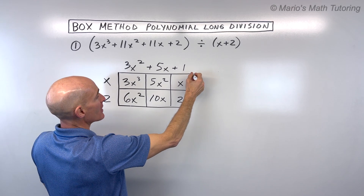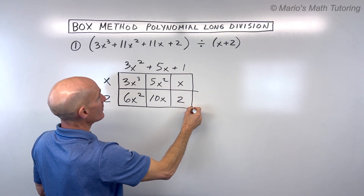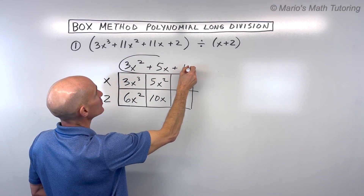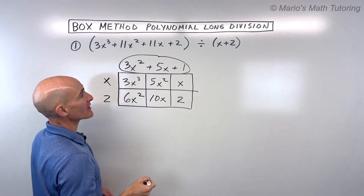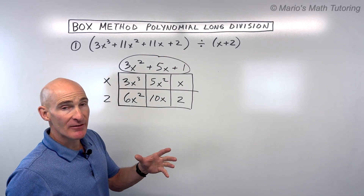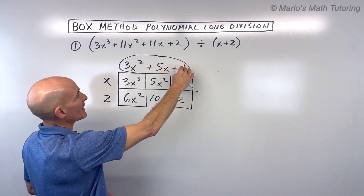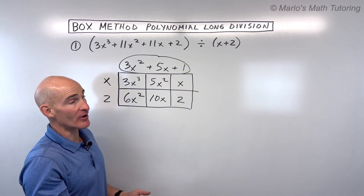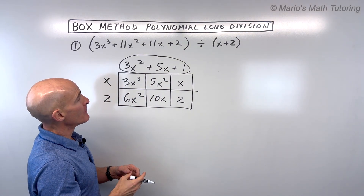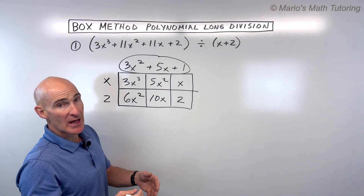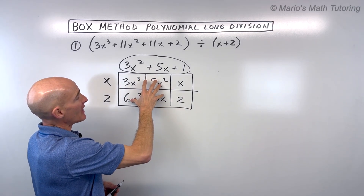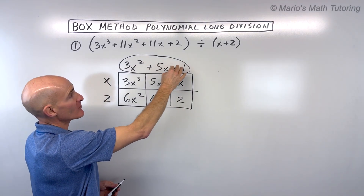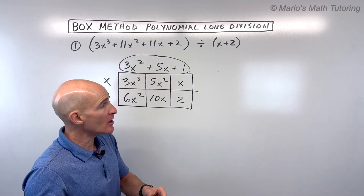There's our 2, and you can see now this is our quotient — this is our answer: 3x squared plus 5x plus 1. It's basically just like finding the area of a rectangle. You take the length times the width equals the area, or base times height equals the area. But now what we're doing is working backwards — it's like we've got the area and maybe we have the width but we don't have the length.